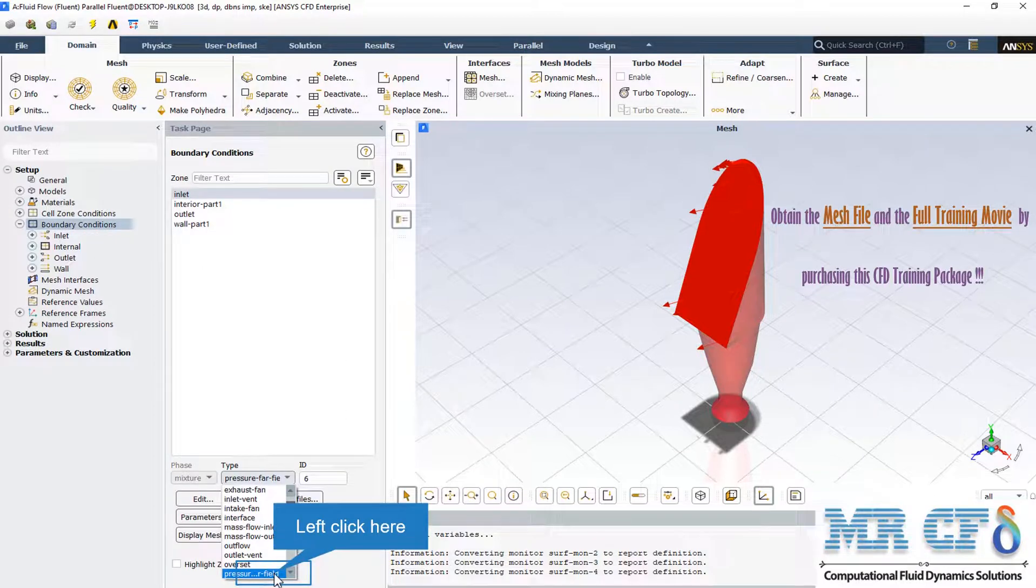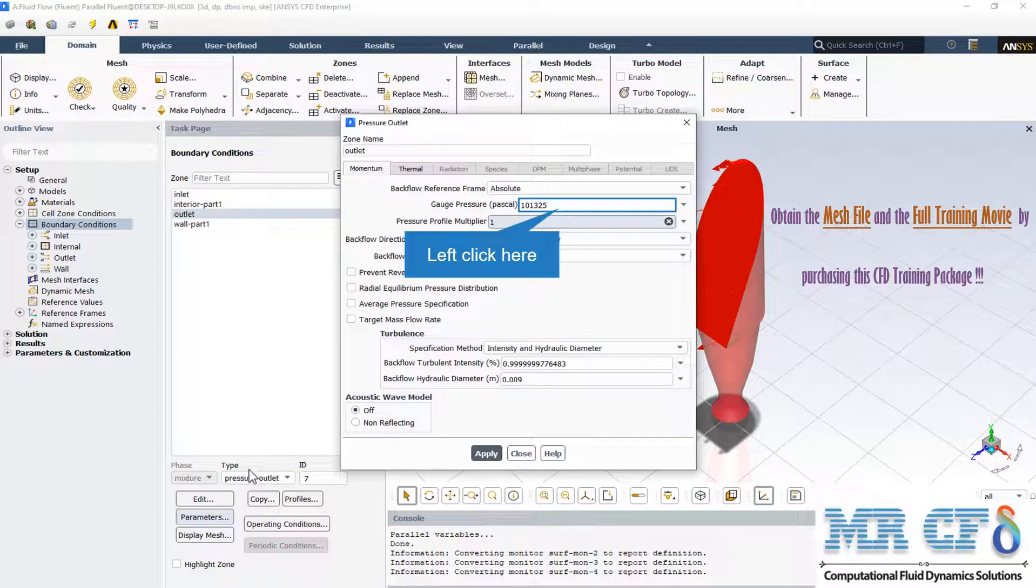The boundary condition type for the inlet is identified as the pressure far-field condition. The pressure outlet boundary condition type has been used for the outlet boundary condition and the gauge pressure is equal to atmospheric pressure.